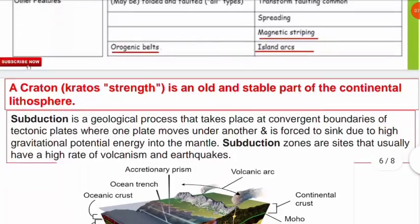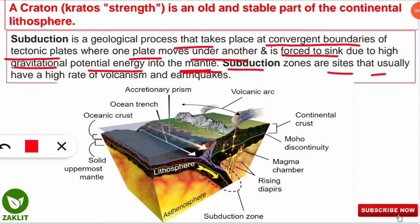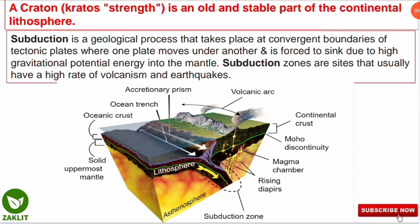Subduction is a geological process that takes place at convergent boundaries. There are two types of boundaries: convergent and divergent. At convergent boundaries, one tectonic plate moves under another plate and is forced to sink into the mantle region due to high gravitational potential energy. Subduction zones have a high rate of volcanism and earthquakes, and on the oceanic part the lithosphere moves down into the mantle region through this process.